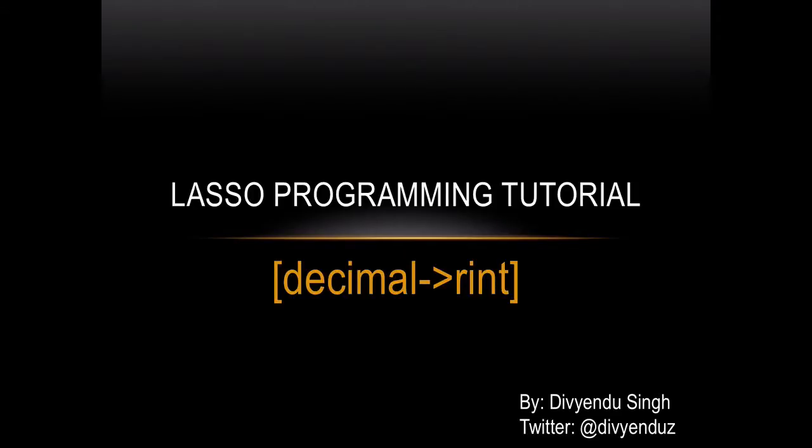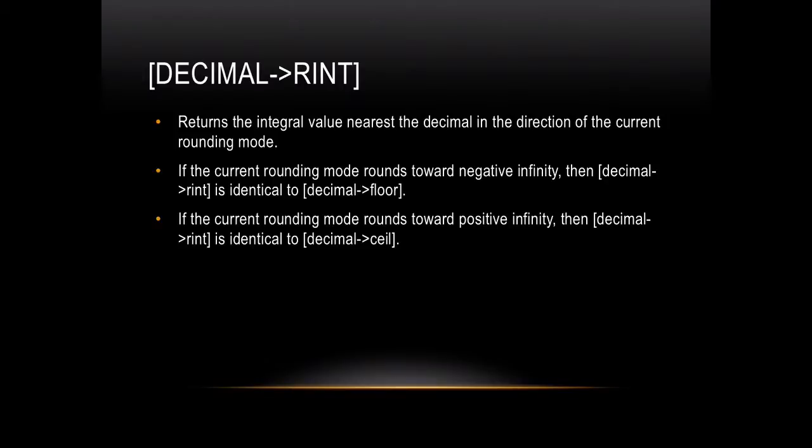In this tutorial, I will talk about the RINT function of the decimal object in Lasso programming. This function returns the integral value nearest to the decimal in the direction of the current rounding mode.